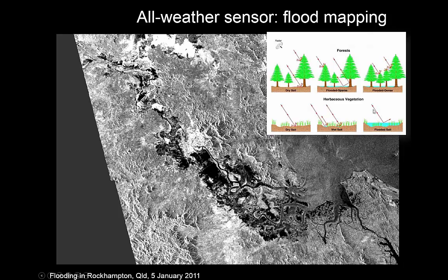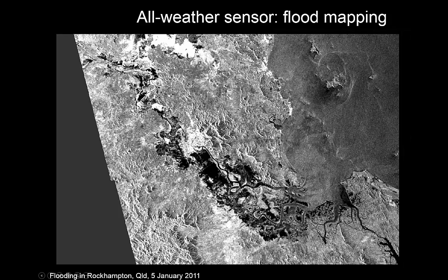Whereas if there is no vegetation, it doesn't return to the sensor. You can also see some other things in this image — you can see the effects of waves, you can get an impression of the general level of noise in radar (it looks quite speckly), and you can see clear effects of foreshortening.